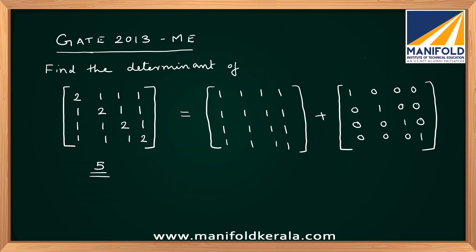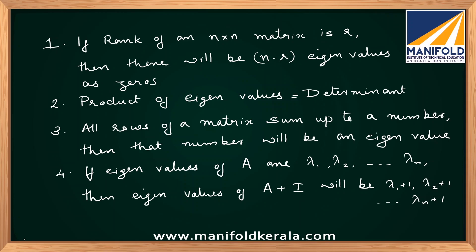There are four points which need to be learned. The first point is: if the rank of an n by n matrix is R, then there will be n minus R eigenvalues which are zeros. For example, if the order of the matrix is 4 and rank is 2, then 4 minus 2 eigenvalues will be 0 — meaning there will be 2 eigenvalues equal to zero.